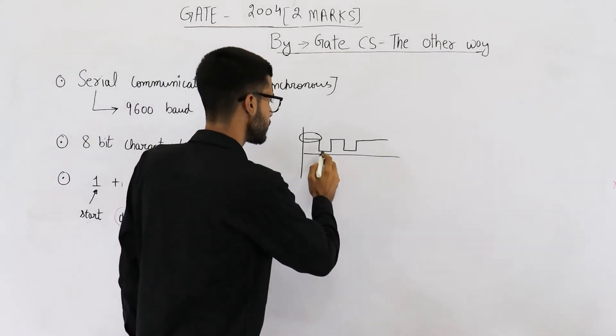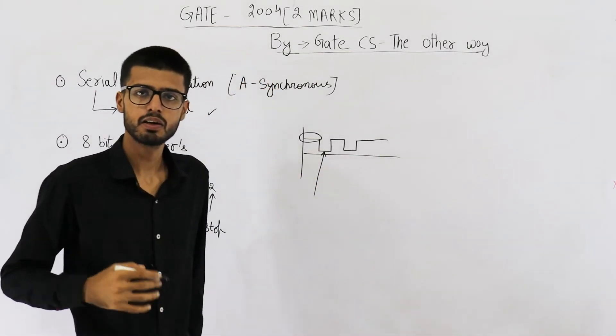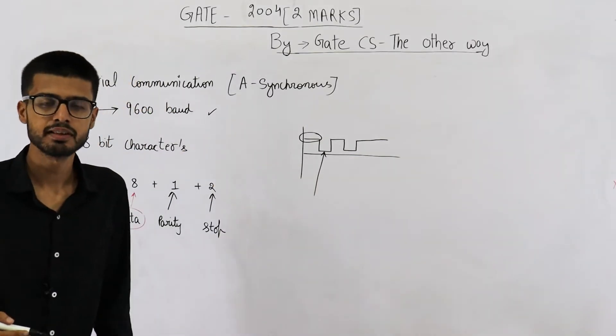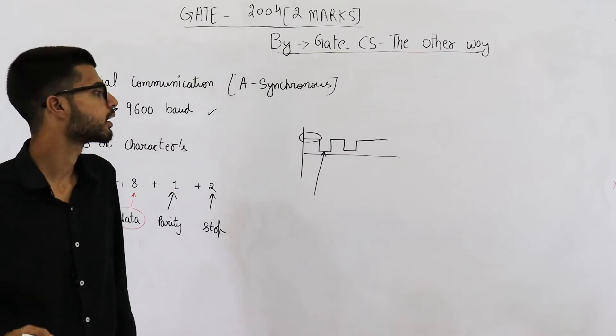Similarly, this is low voltage. It is called signaling event or a symbol. We can send such 9600 symbols every second.